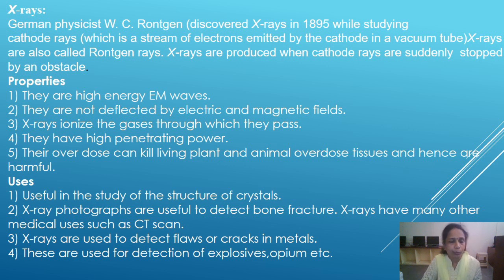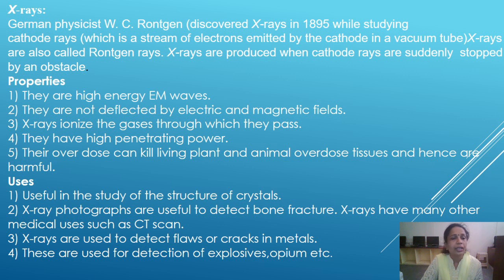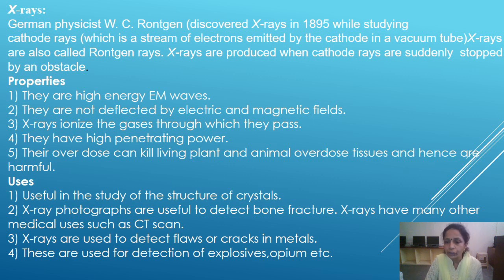Properties of X-rays: First, they are high-energy electromagnetic waves. Second, they are not deflected by electric and magnetic fields. Third, X-rays ionize the gases through which they pass. Fourth, they have high penetrating power. Fifth, their overdose can kill living plants and animals, damaging tissues, and hence are harmful.